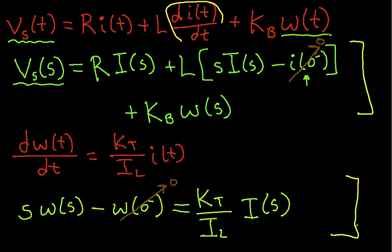We had this term, the di dt. We used the properties of the Laplace transform, which says that the Laplace transform of the derivative of a signal is s times the Laplace transform of the signal. If you're doing the bilateral Laplace transform, that's all there is. If you're doing the unilateral Laplace transform, then you have this initial condition.